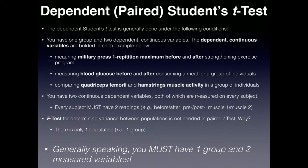To put it simply: for a dependent or paired t-test you have one group and you're measuring two variables on every single person in that group. Now that we've talked about the theory behind why you would use a paired t-test, let's go to the Excel file and I'll show you how to do it.